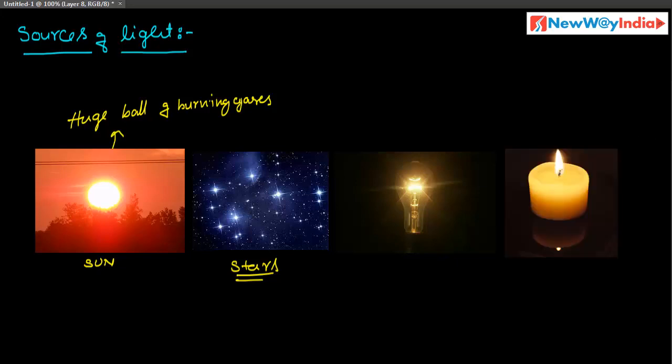Another source of light is the candle — it also gives light energy. So electric bulb and candle are different sources of light. In this way we can observe so many sources of light, such as kerosene lamp and fluorescent lamp.